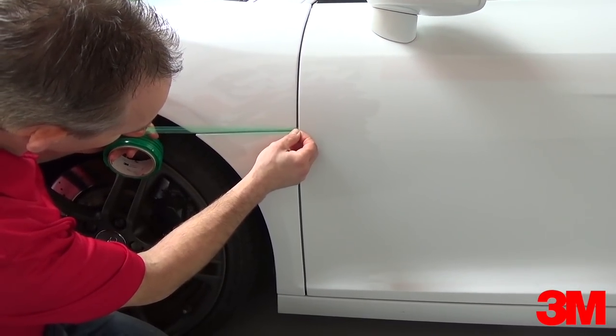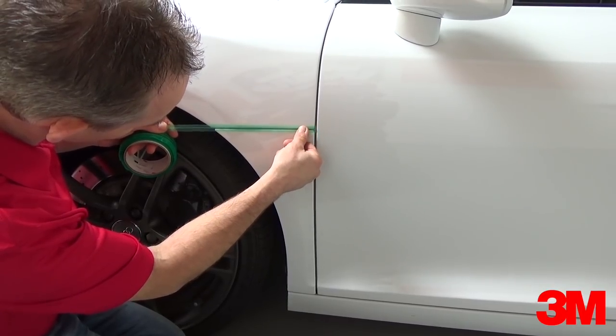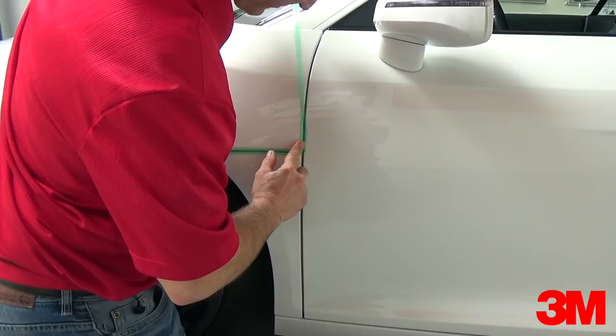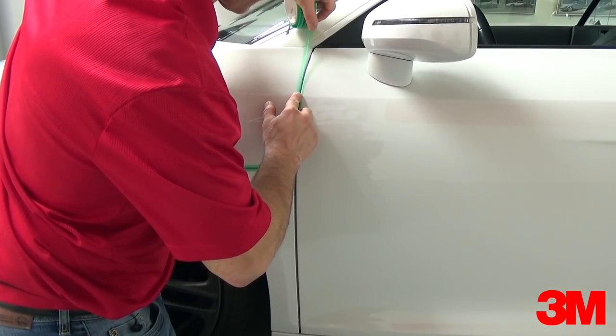To work around this problem you can use the inside outside point techniques developed by Phil Aquin, head trainer for 3M Knifeless Tape. To begin, place bridge line over any wide gaps, in this case between the front fender and door.